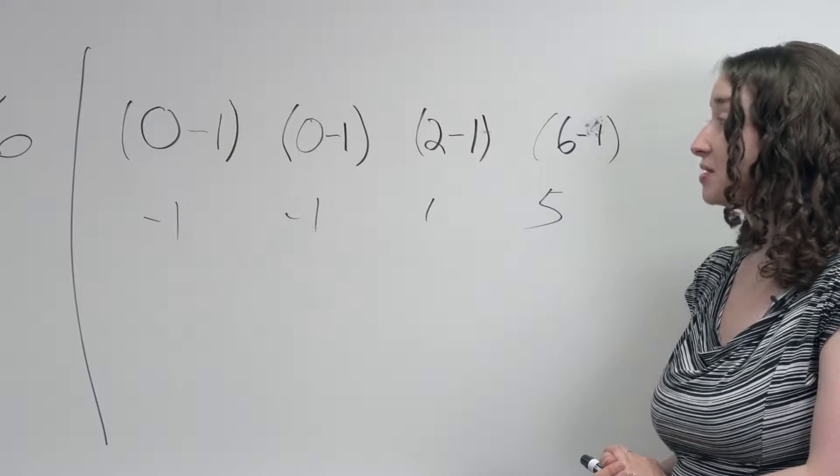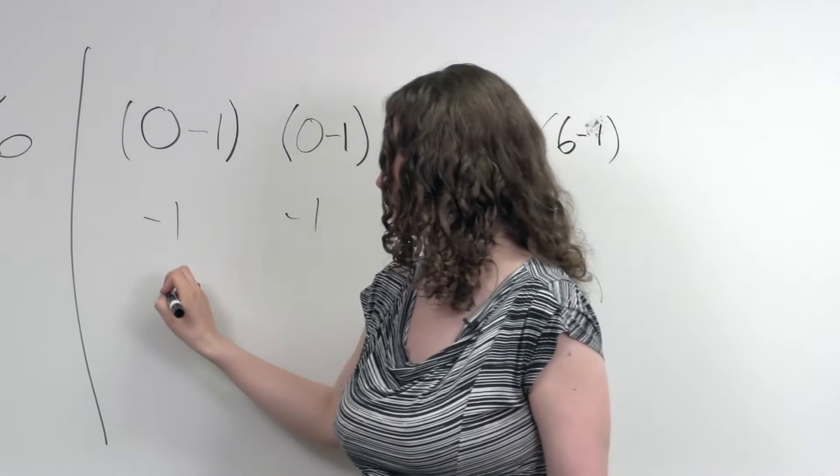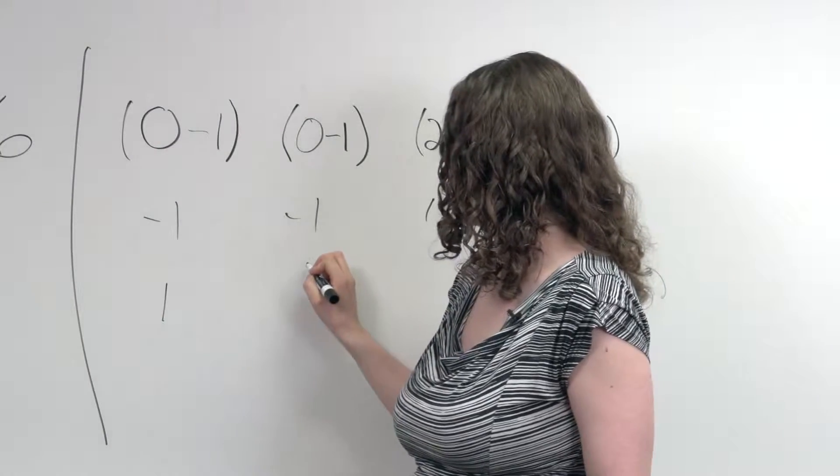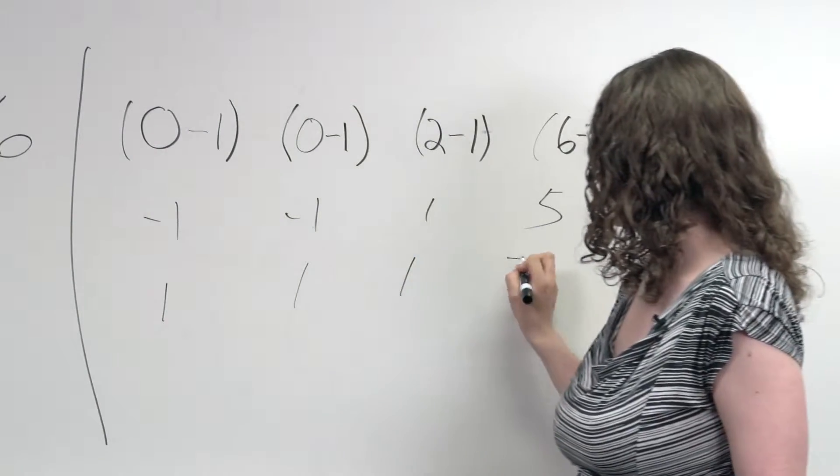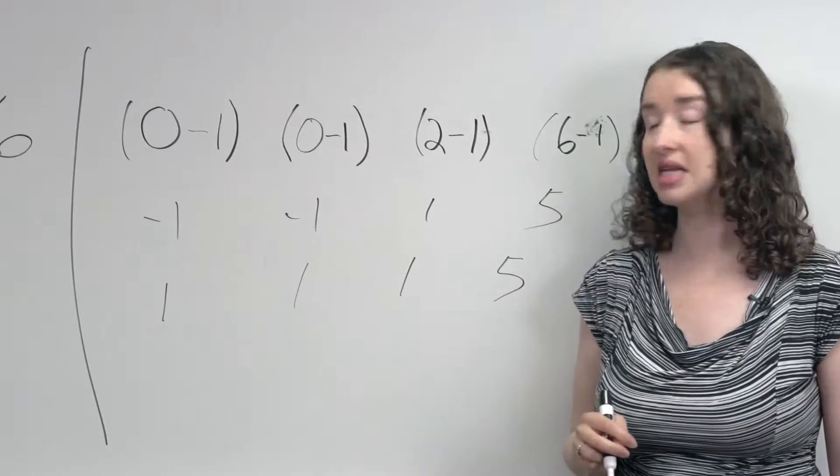One way to handle that would be to take the absolute value of each of these points. So if I take the absolute value of each of these differences, I've got a 1, a 1, a 1, and a 5. These are the absolute values of the differences between each data point and the median.